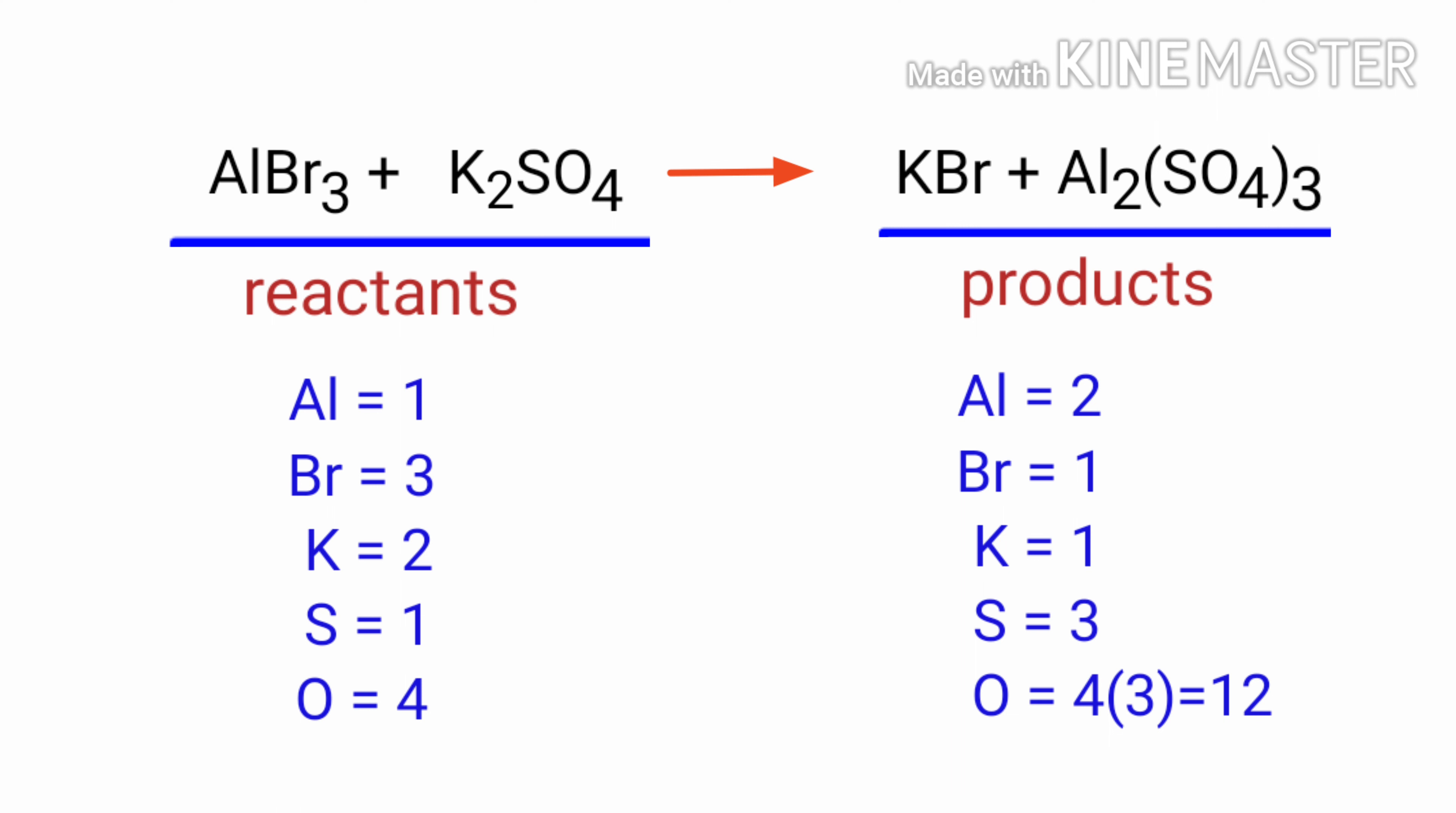In this equation, we need to balance the aluminum atoms first. To do this, we need to put a coefficient of 2 in front of AlBr3. The aluminum atoms are balanced.